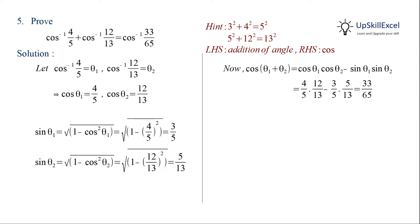If we take cos inverse on both sides we get theta 1 plus theta 2 is equal to cos inverse 33 by 65.